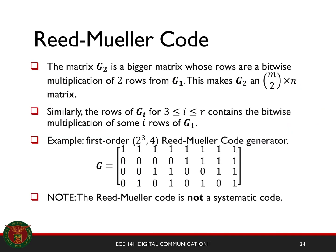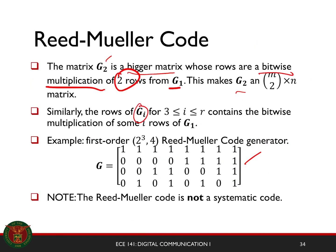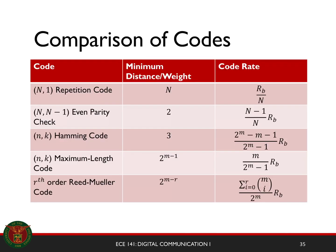Your g1 is an M-by-n matrix whose columns are distinct binary sequences of length M in natural order — starting with an all-zero column, then incrementing up through to the all-ones column. Your g2 is a larger matrix whose rows are the bitwise multiplication of any two rows from g1. An example is the first-order, 8-column Reed-Muller code. Note that the Reed-Muller code is not a systematic code — you cannot form a pattern with an identity matrix and a parity generator.